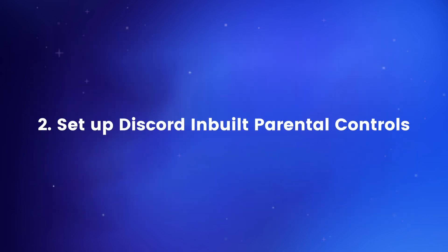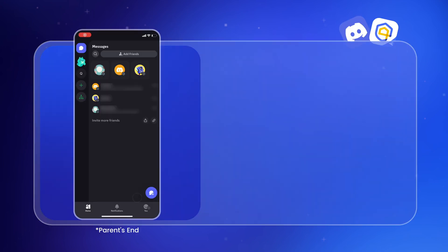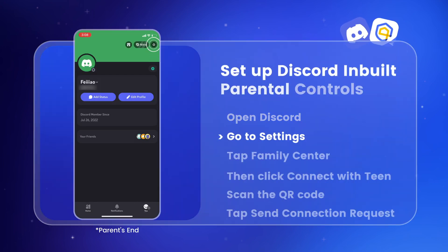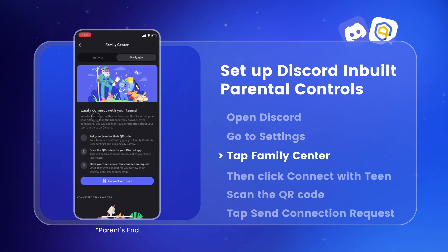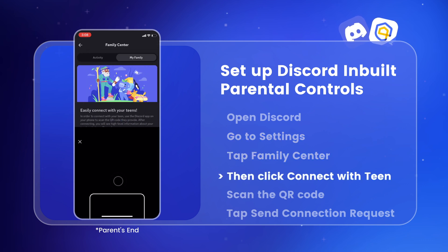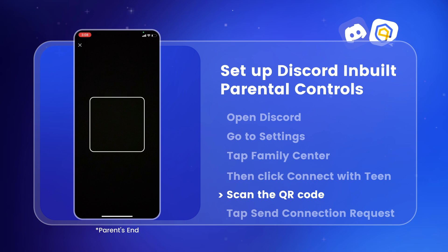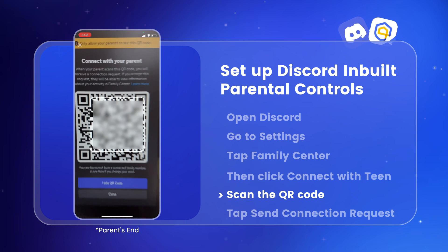Along with privacy controls, parents can monitor their kids' Discord activity using the app's parental features. Open Discord, go to Settings, and tap Family Center. Then click 'Connect with Teen,' have your child's Discord account ready, and scan the QR code.